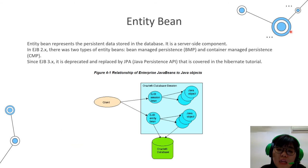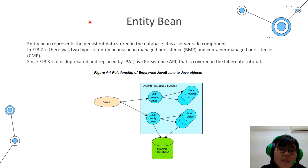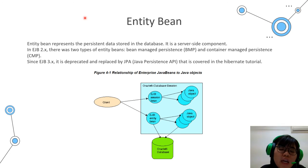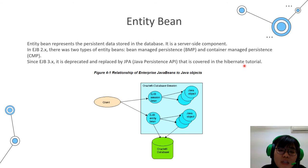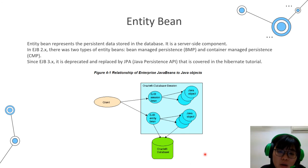The last type is the entity bean. Entity beans represent persistent data stored in the database. It is a server-side component, and there are two types: bean managed persistence (BMP) and container managed persistence (CMP). Here is a picture showing the relationship of Enterprise Java Beans to Java objects in an entity bean.